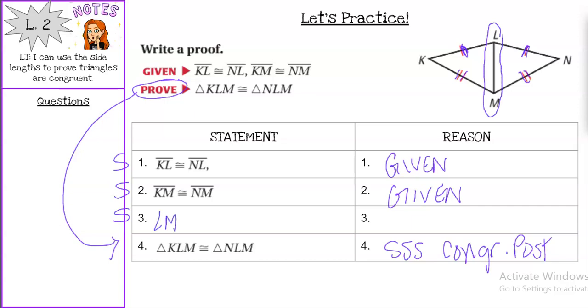So we would say LM is congruent to itself, LM. And our reason for that, if you remember all the way back to unit two, the reflexive property of congruence.